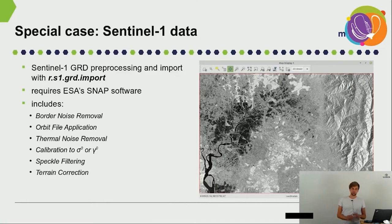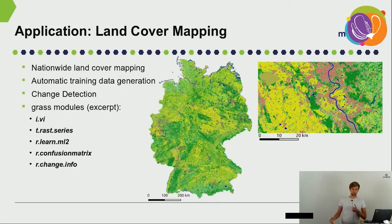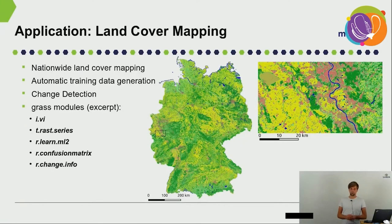Finally, I'd like to show some application examples of how we use these add-ons in our projects. The first example is a nationwide land cover map generated from Sentinel-2 time series for the whole of Germany for different years. We generated indices from the Sentinel-2 time series, and by looking at the temporal dynamics of these spectral indices we can determine what land cover type is present at a specific area. For the classification itself we used a machine learning approach implemented in GRASS GIS in the r.learn.ml2 module, and we also did change detection to monitor dynamics in settlement and infrastructure between two or more years.